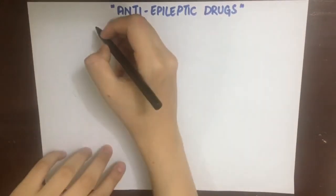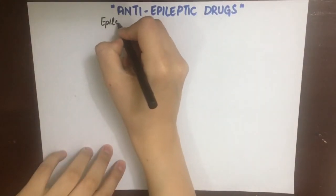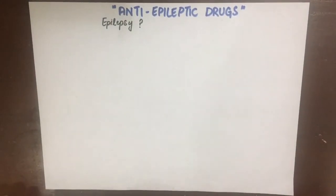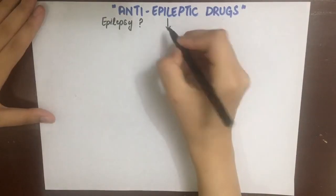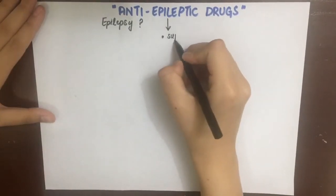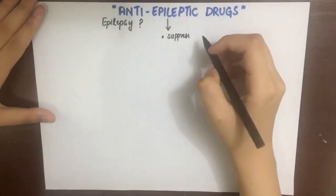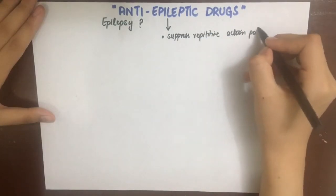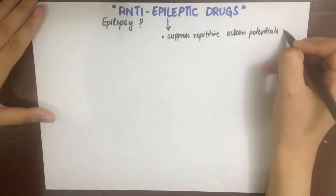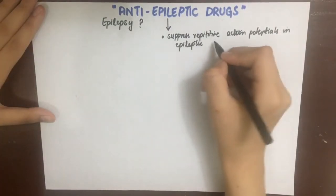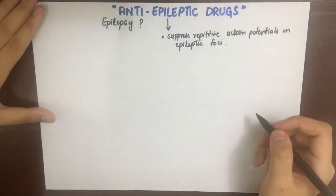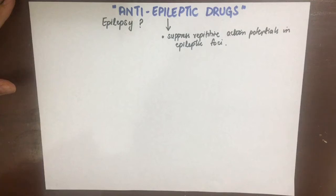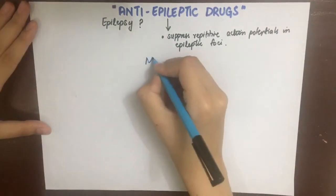Anti-epileptic drugs or anti-convulsants are used in the treatment of epilepsy. Epilepsy or seizures result from episodic electrical discharges in cerebral neurons associated with prolonged depolarization, during which sustained high frequency repetitive firing occurs followed by prolonged hyperpolarization. Our goal in drug therapy is to suppress the repetitive action potentials in the epileptic foci of the brain and to restore the normal patterns of electrical activity.